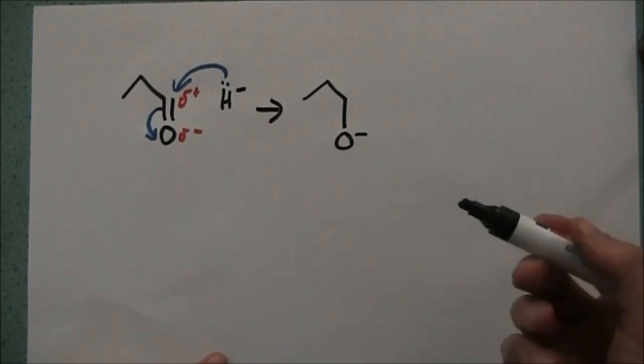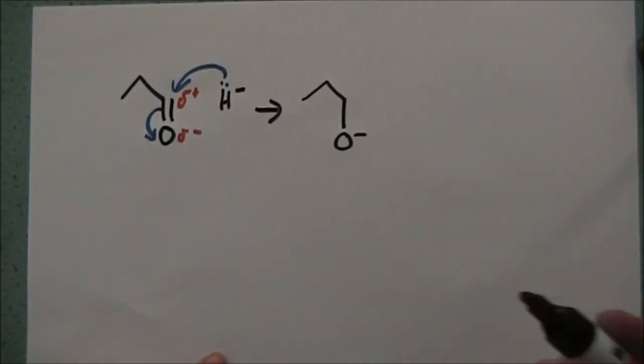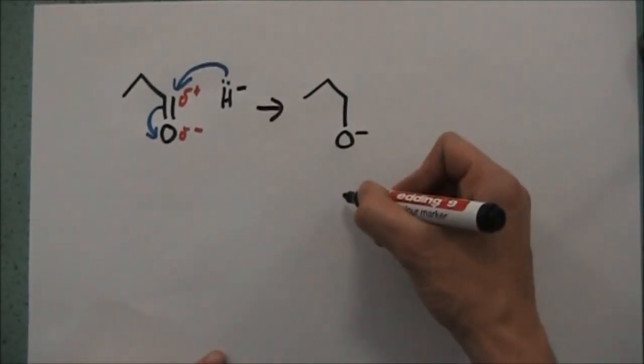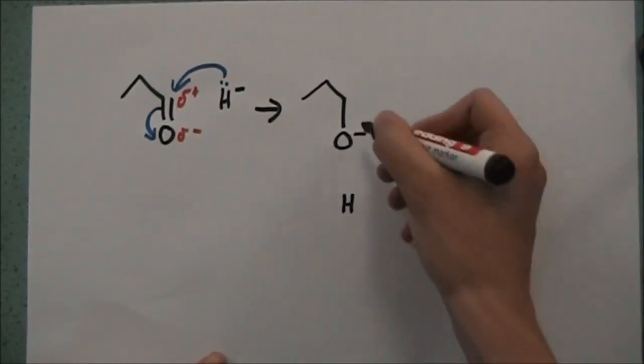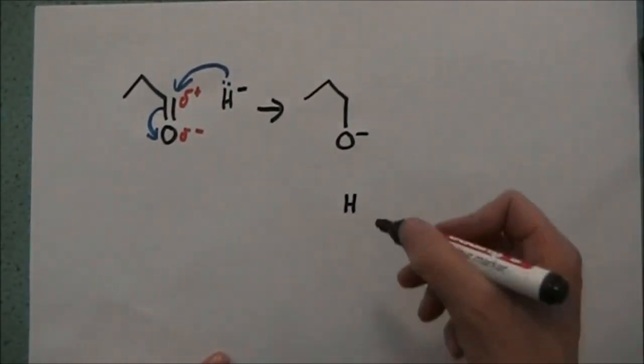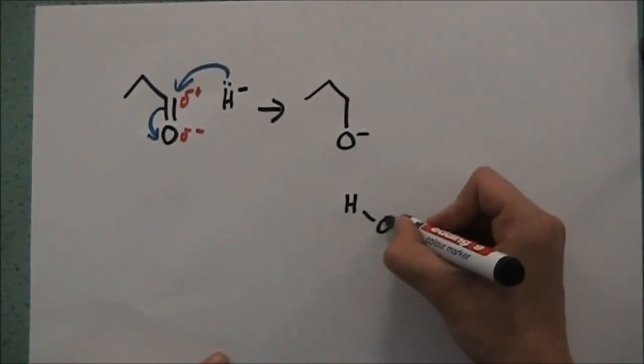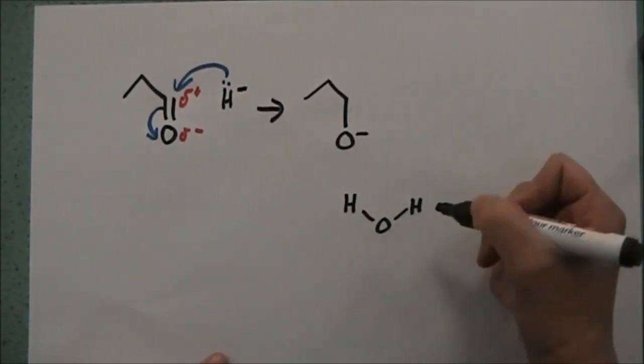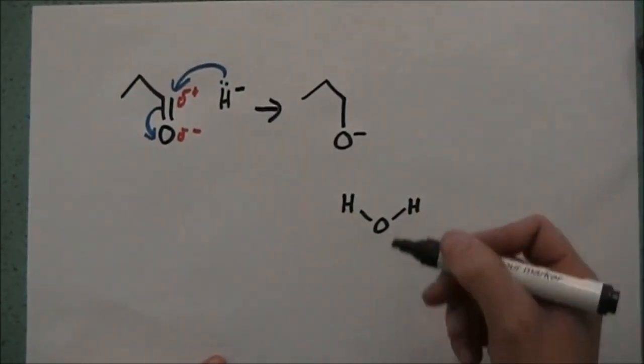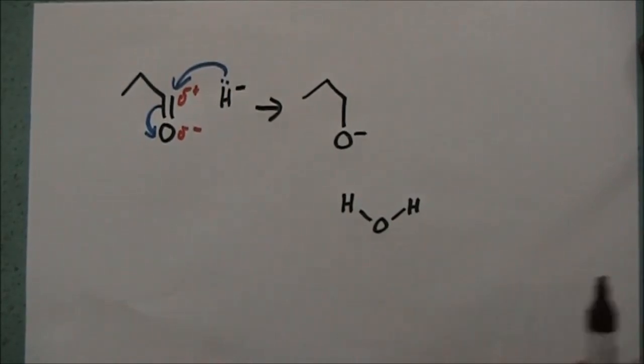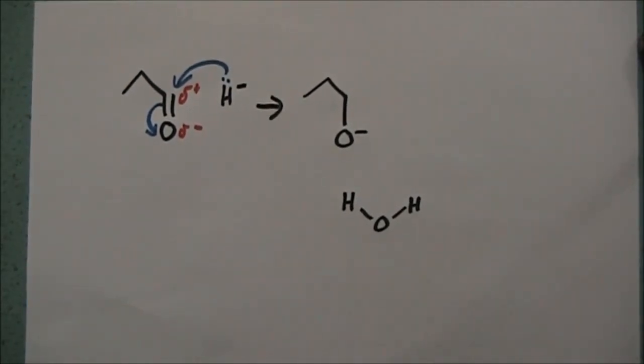In this specific example, we're going to need something here to react with the O minus to make it into a whole neutral molecule again. And with this specific example, it's water that we're going to use to donate our proton. And the reason that water's going to work, of course, is that we've got a dipole here, delta plus, delta minus.